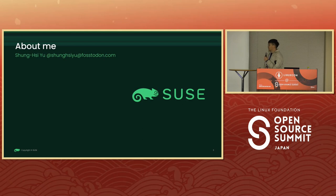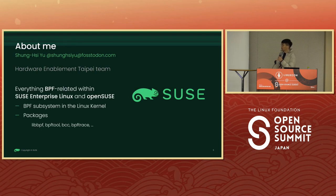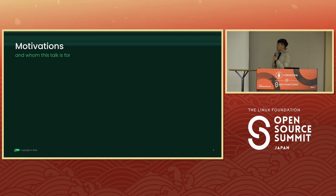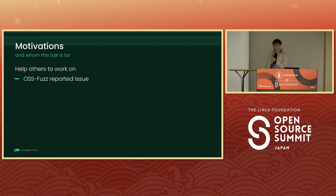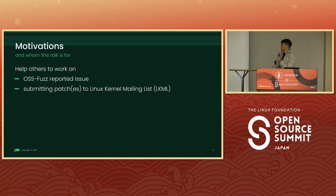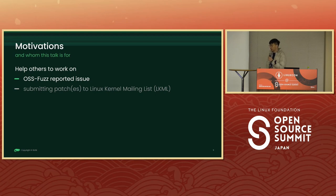My name is Shang-Chi and I work at SUSE under the Hardware Enablement Taipei Taiwan team. I mainly work on BPF, but that's not the topic of the talk today. Today I'm going to talk about a brief walkthrough of how to work with OSS-Fuzz reported issues, and also a bit about how to submit a patch to the Linux kernel mailing list, LKML for short. But my main focus today will really be the OSS-Fuzz reported issue. So let's dig into it.